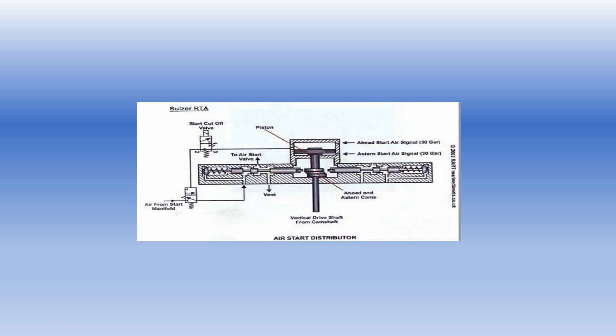The pilot valve follower engages with the ahead cam. Once the pilot valve follower is at the base circle of the cam, the air is allowed to pass through the distributor and into the respective cylinder starting air valve based on the timing of the starting air distributor. When the pilot valve is not in use, the spring moves the pilot valve away from the cam.